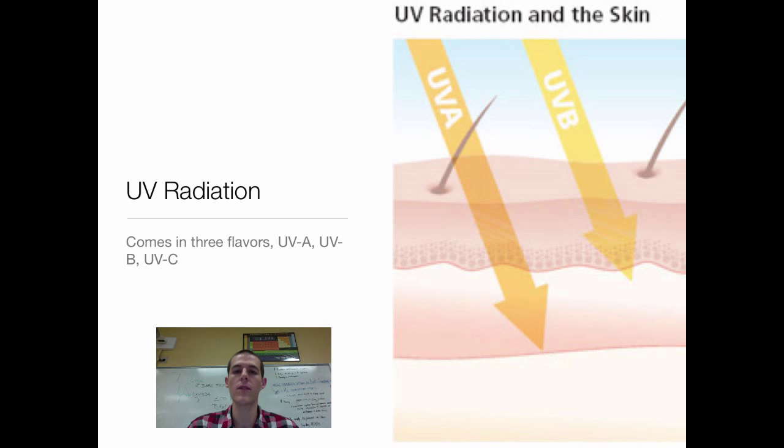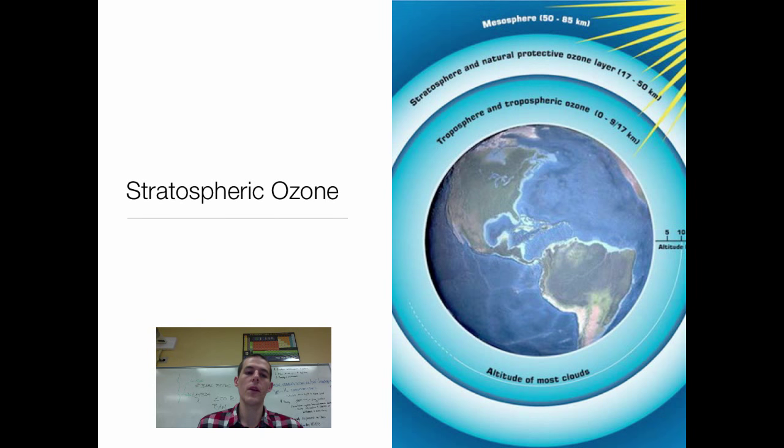So keep that in your brain as we move on forward. All of these UV radiations can cause damage to living organisms on the surface of the Earth. UVA, UVB are the big ones that we are concerned with.